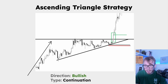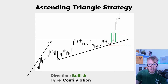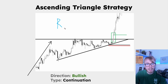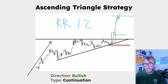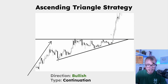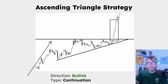The stop loss here is pretty straightforward — we want to set the stop just below the most recent low inside the triangle. We can once again use a risk-to-reward ratio of one to two, so our target would be right around here.